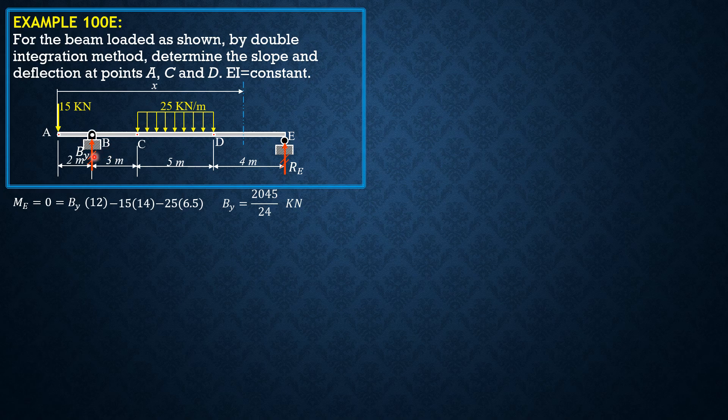Beginning with B_Y, clockwise positive. We extend the loading so that the moment equation will also be applicable in this section. Take note this 25 kilonewton per meter and its distance from A is X minus 10.